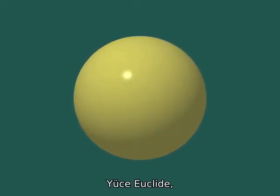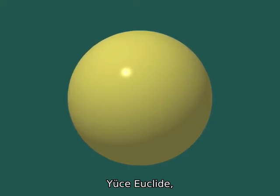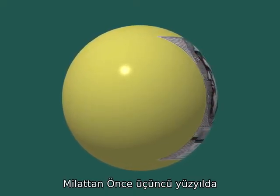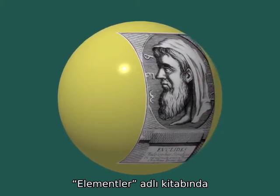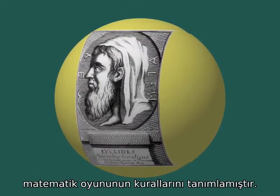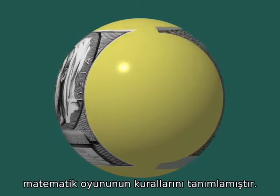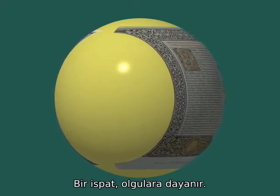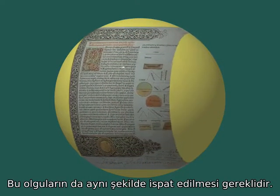The great Euclid, during the third century before Christ, formulated the rules of the mathematical game in his book, The Elements. A proof has to rely on facts that themselves have to be proved.